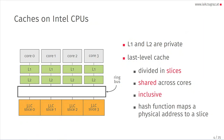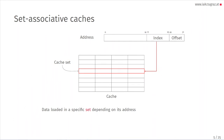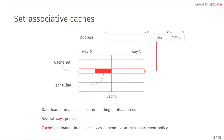We have a hash function that maps a physical address to a slice. This function was not documented, but has been reverse engineered. Nowadays we have set-associative caches, which work like this: data is loaded into a specific set depending on its address — a few address bits. We have several ways per set, here four ways. A cache line is loaded into a specific way, and that depends only on the replacement policy, which decides which cache line to evict to make room for the new one.